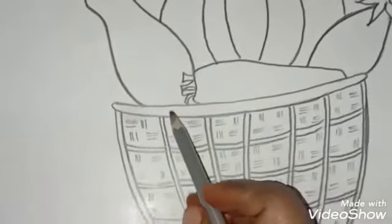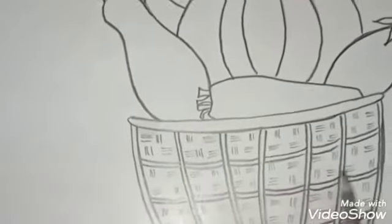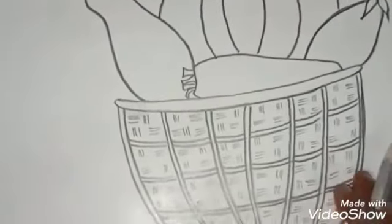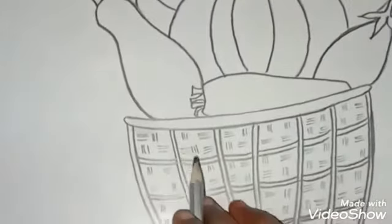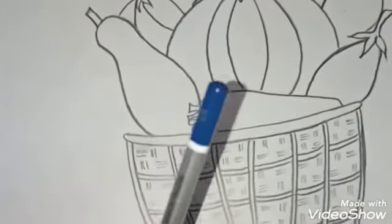Like this you have to draw small small lines inside the basket. Now I am going to shade this basket with 8B pencil.